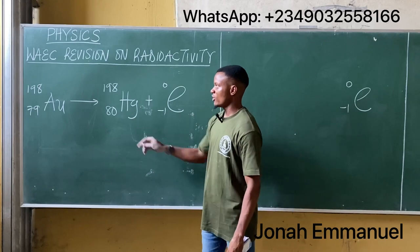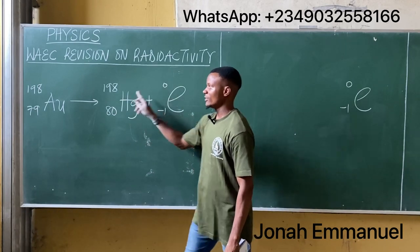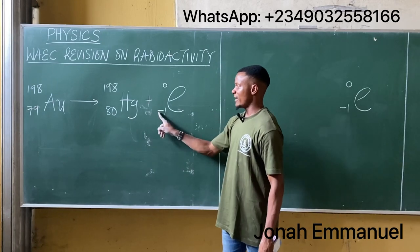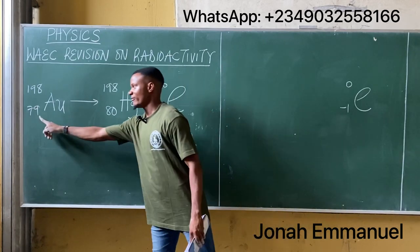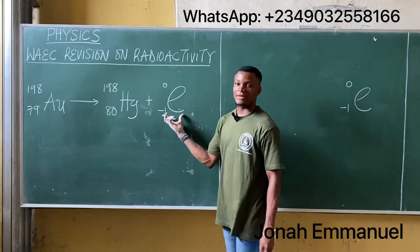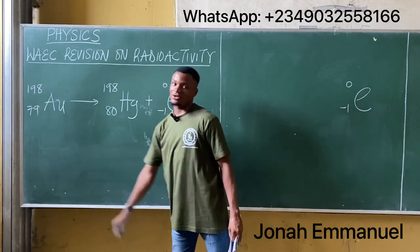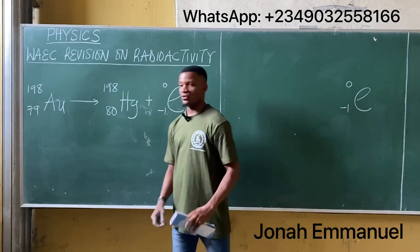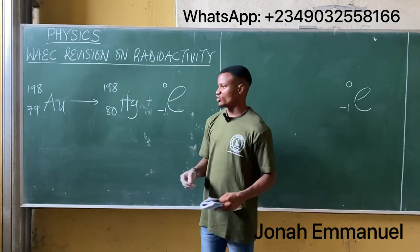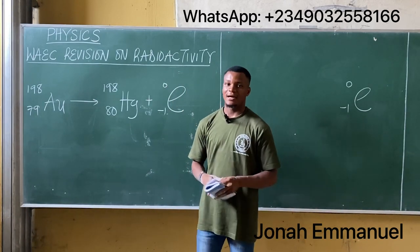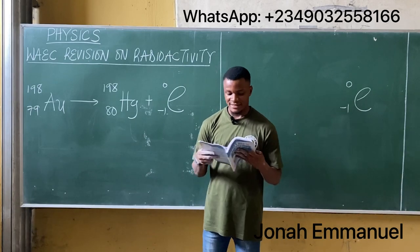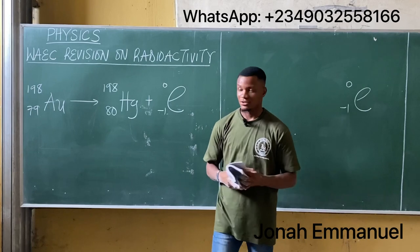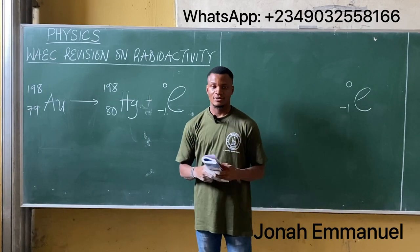The atomic number becomes 80 plus minus one, which gives you 79. So only one beta particle matches this equation. Hence we can say gold Au emits just one beta particle. My answer is one, which is option A. That's how you answer this question.